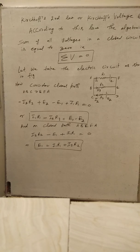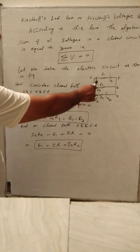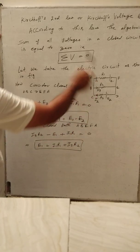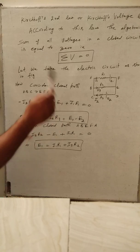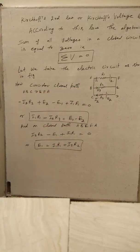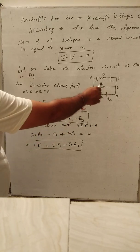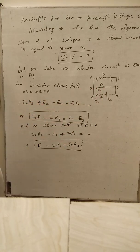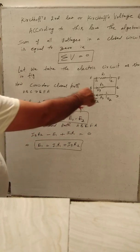For this, we take up the sign conventions. The product of I1 and R1 is taken as positive if we consider the current along the direction of the closed path.